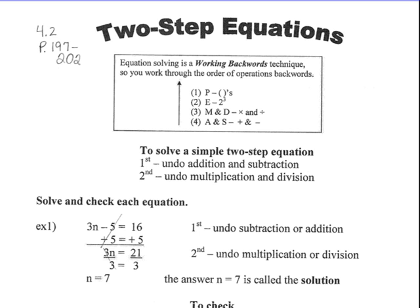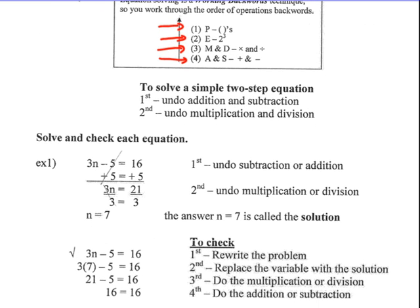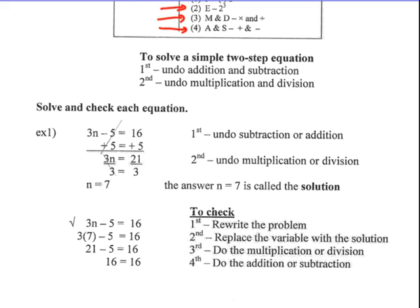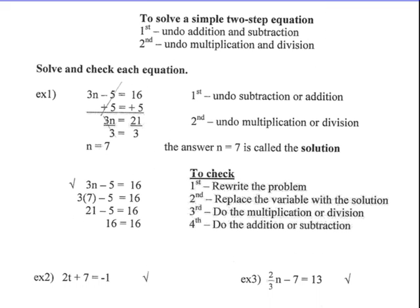Equation solving is always a working backwards technique, so you work through the order of operations backwards. You're going to look for adding and subtracting first, multiplying and dividing second, anything with an exponent third, and parentheses or grouping symbols last. So we're going to work in the inverse of the order of operations — look for adding and subtracting first, then multiplying and dividing.